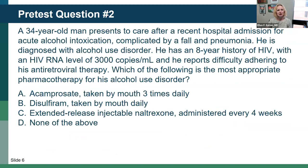Next pre-test question. You have a 34-year-old man who presents to care after a recent hospital admission for acute alcohol intoxication, complicated by a fall and pneumonia. He's diagnosed with alcohol use disorder. He has an eight-year history of HIV with a viral load of 3,000 copies per mL, and he reports difficulty adhering to his ART. Which of the following is the most appropriate pharmacotherapy for his alcohol use disorder? A) acamprosate taken orally three times a day, B) disulfiram taken by mouth daily, C) extended-release injectable naltrexone every month, or D) none of the above?